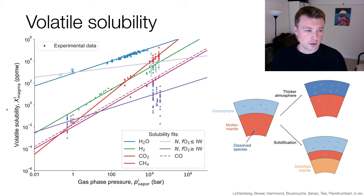This is shown in this figure, where the y-axis shows the solubility of a specific compound in the melt—meaning its affinity to go into the magma rather than the atmosphere—versus the gas phase pressure.